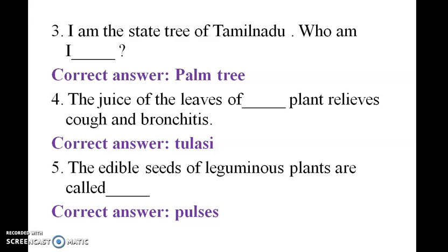I am the state tree of Tamil Nadu — who am I? The answer is the palmyra tree (panai mara). The juice of leaves of tulasi plant helps treat cough and bronchitis. The edible seeds of leguminous plants are called pulses.